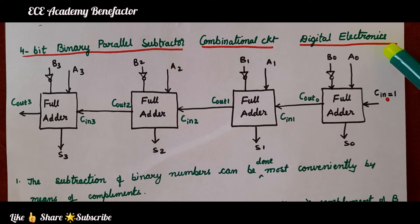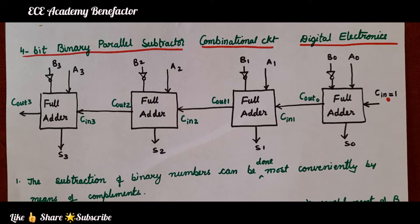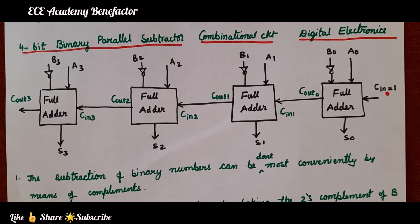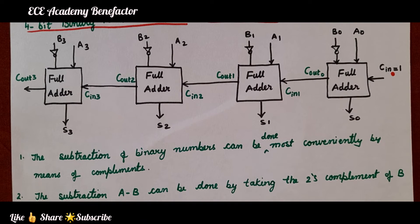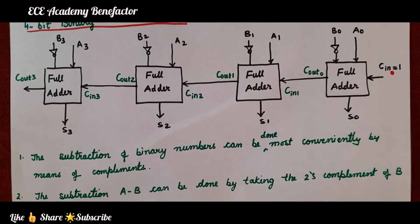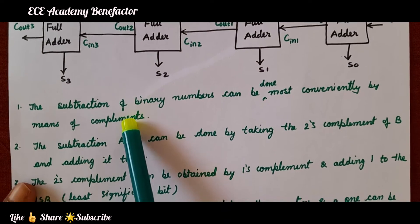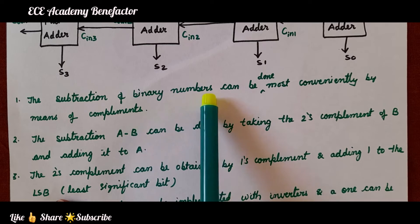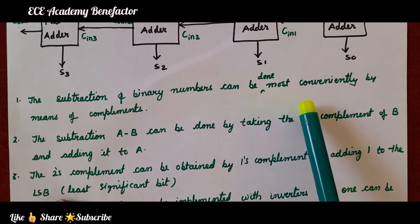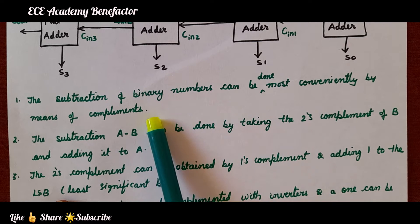In this class we will be seeing the diagram of a 4-bit binary parallel subtractor. As you know, binary subtraction is more conveniently done using 2's complement — using the complement method, the 1's complement or 2's complement. But 2's complement is taken here. Let us see a few points before the block diagram. The subtraction of binary numbers can be done most conveniently by means of complements.